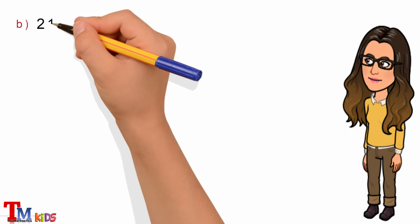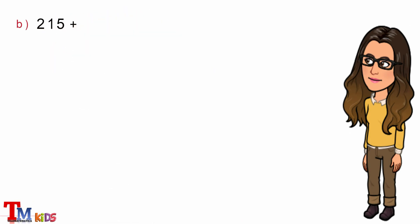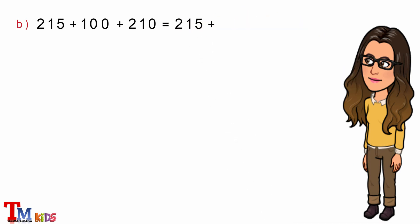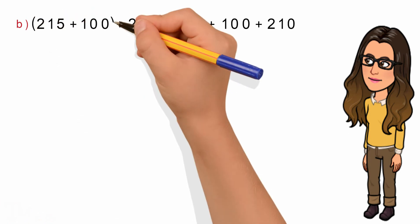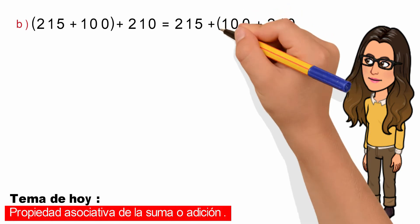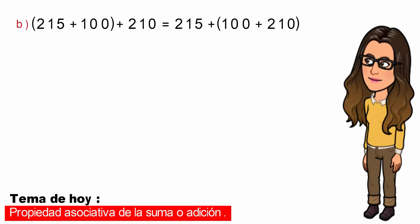Y nos quedaría 215 más 100 más 210. De forma similar al literal anterior, vamos a asociar dos de los números que se encuentran a la izquierda del símbolo de igualdad, y dos que se encuentran a la derecha.